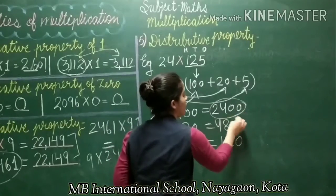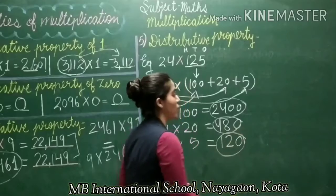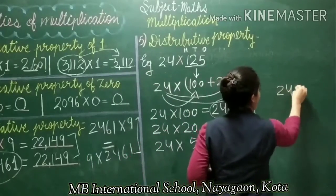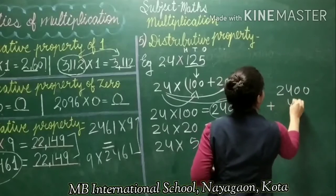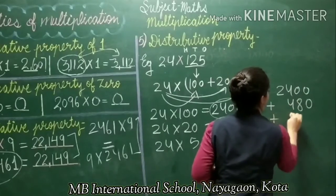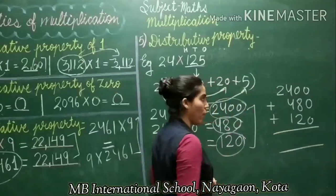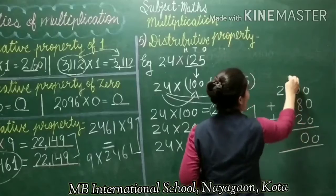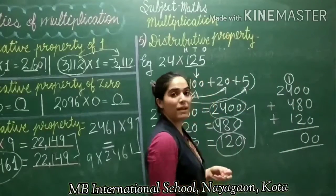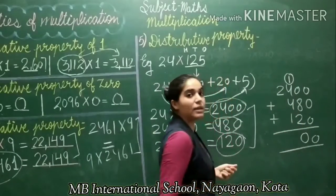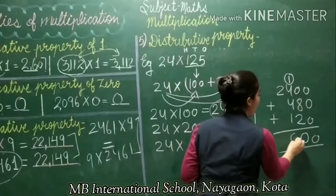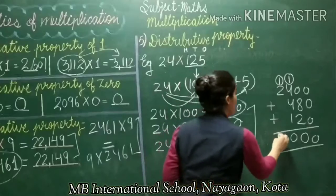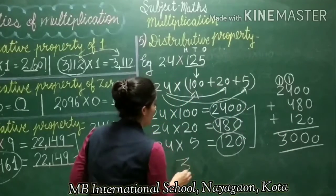We have to add all the products we got after multiplying. All 3 products we will add to get the final product. We will add 2,400 plus 480 plus 120. So, 0 plus 0 is 0, 8 plus 10 is 0 with 1 carry forward, 4 plus 1 is 5, 5 plus 4 is 9, 9 plus 1 is 10 so 0 down and 1 carry forward, 2 plus 1 is 3. So our final product is 3,000.